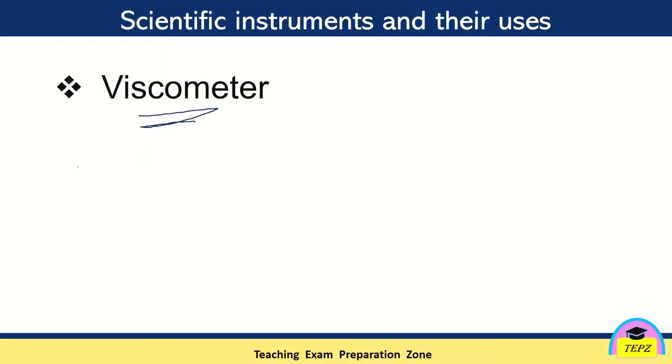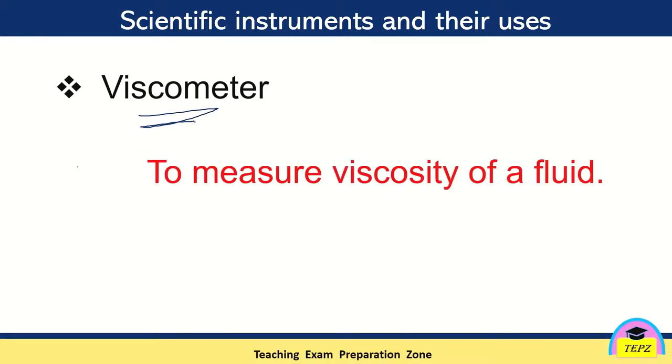Viscometer. So viscometer is used to measure the viscosity of a fluid. The viscosity of a fluid is measured with the help of viscometer.